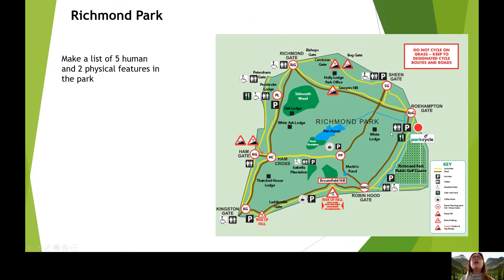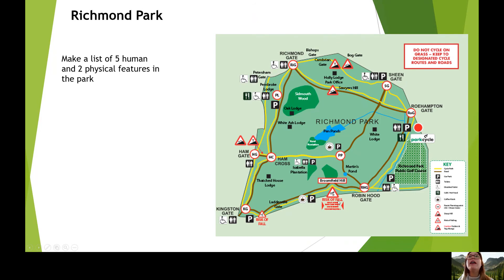We can also see some natural features — a wood here, this green wood, and a pond here. Can you spot the other smaller pond in the park? We can also see some danger signs where it's steep, where there's gravel, where there's a risk of falling. We can also see wheelchair signs that show there's disabled access if you're in a wheelchair, which is also important information to know.